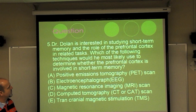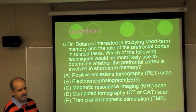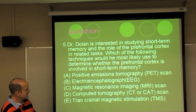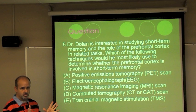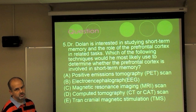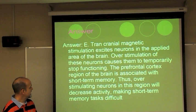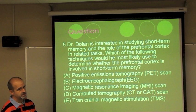Test question: Dr. Dolan is studying short-term memory and the role of the prefrontal cortex — which technique would be most likely used to determine whether the prefrontal cortex is involved? The choices include PET scans, EEG, MRI, CT scan, and transcranial magnetic stimulation. The answer is transcranial magnetic stimulation — it excites the neurons to see how they function, making sure they're going to fire properly.